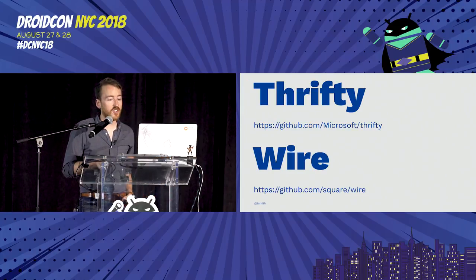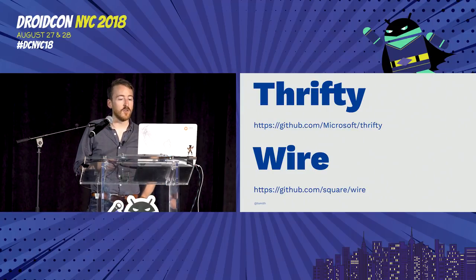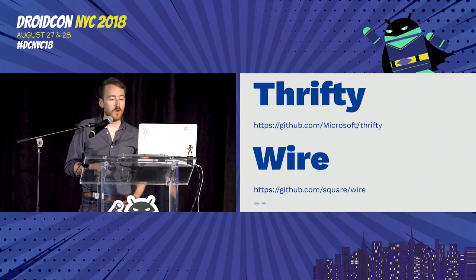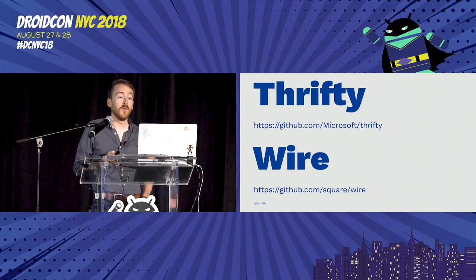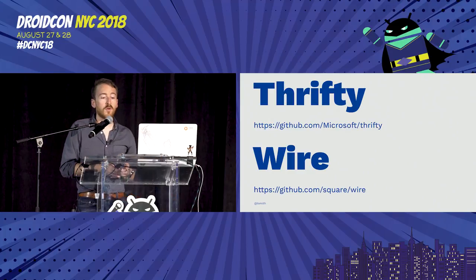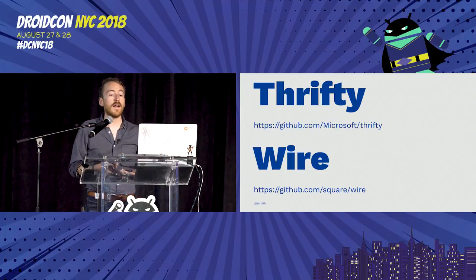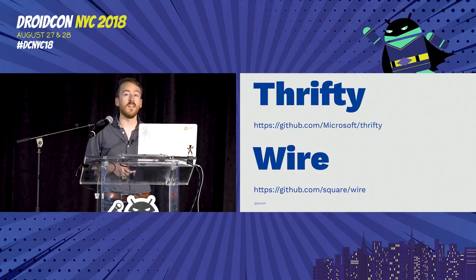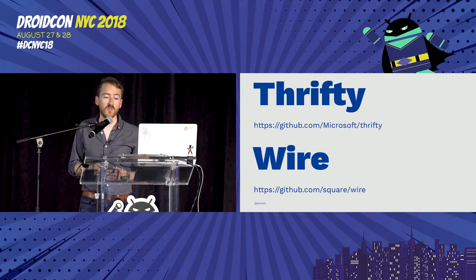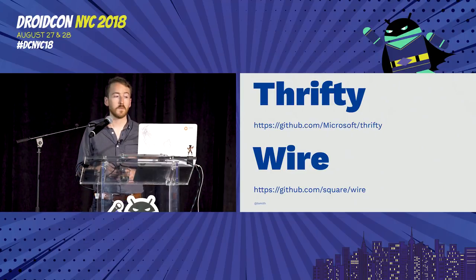We primarily generate everything using a stack built on top of Thrifty — Microsoft's mobile-focused Thrift compiler. Thrifty takes a similar approach to Square's Wire for Protobuf and generates a much smaller number of classes from the spec for more efficient use on mobile.